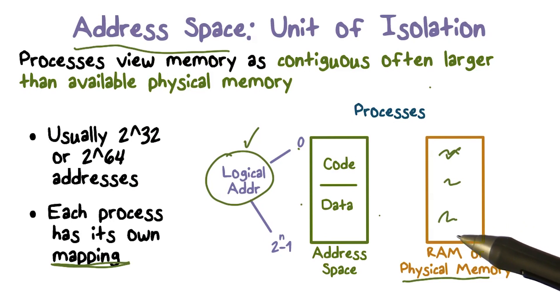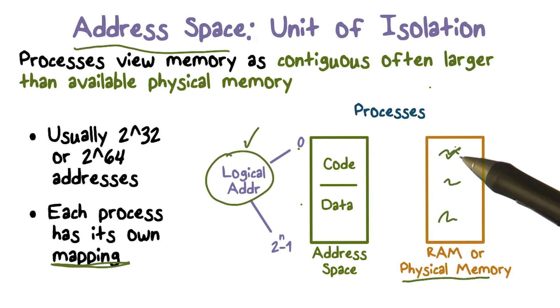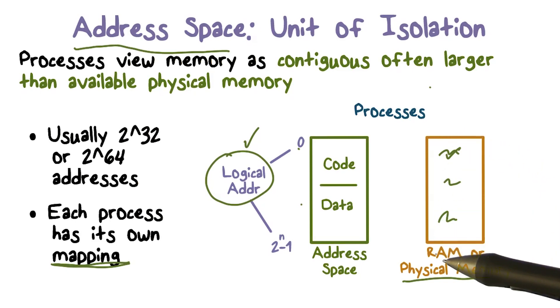This address space has to be backed up, or physically has to be supported with the physical memory that we have. And this physical memory, there could be multiple processes having their address spaces concurrently existing in this physical memory that we have.